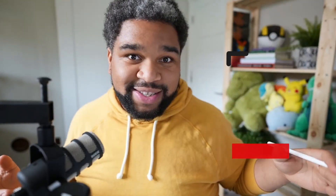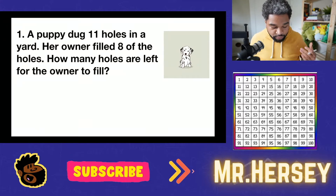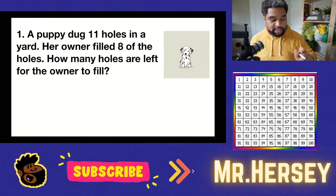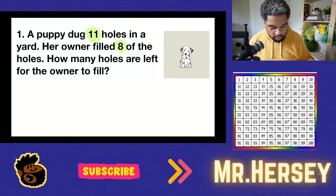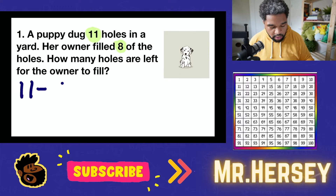A puppy dug 11 holes in a yard. Her owner filled eight of the holes. How many holes are left for the owner to fill? Remember, we always read these word problems twice. A puppy dug 11 holes in a yard — her owner filled eight of the holes. How many holes are left for the owner to fill? So before we do anything else, let's draw our number sentence. We started with 11 holes, then the owner came in and filled eight holes.